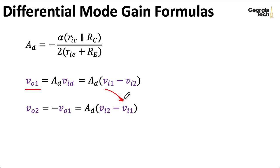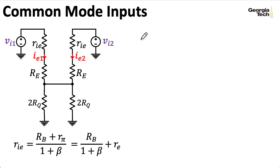So now let's talk about common mode inputs. For this analysis, I've rewritten the resistor RQ in the tail as two parallel resistances, each of resistance 2RQ. So let's set the inputs to be the same voltage, VICM.